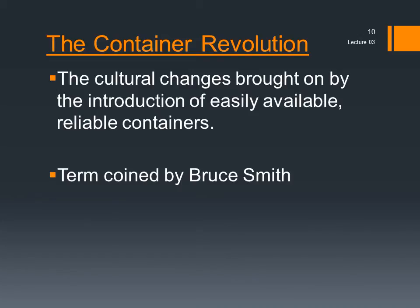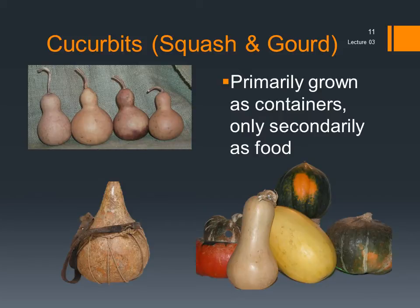The container revolution also produced a fundamental shift in material culture. For the first time, durable, sturdy, and easily available containers for food were available. Remember that subsistence strategies were shifting towards collecting and storing large amounts of food in the Archaic, and containers are essential for those activities. Whereas Paleo-Indian and early Archaic peoples must have made do with skin bags and basketry — we don't think that they had woven textiles, that is cloth, in those periods — the Middle Archaic peoples first began using cucurbits as containers. Cucurbits are more colloquially known as squash and gourds. Bruce Smith, one of the most prominent Eastern Woodlands archaeologists of the last several decades, believes these plants were first used primarily as containers, and only later eaten as food.